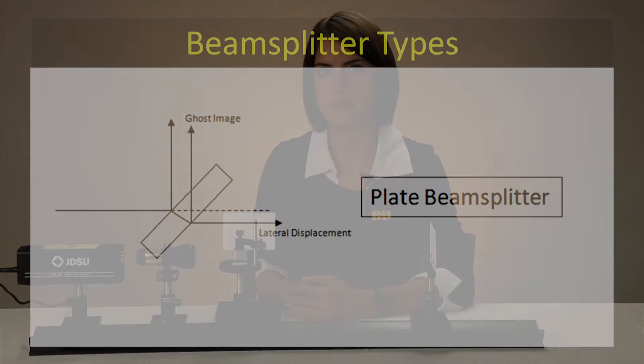Advantages of a plate beam splitter include less chromatic aberration, less absorption due to less glass, and a smaller and lighter design compared to a cube beam splitter.